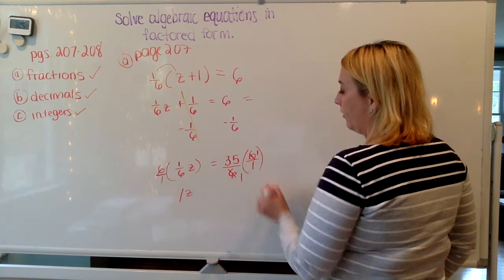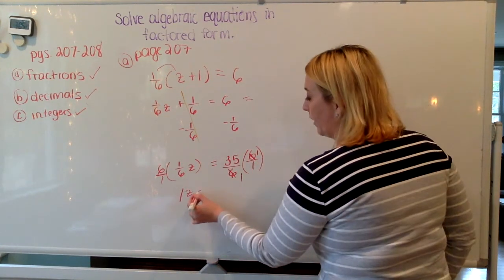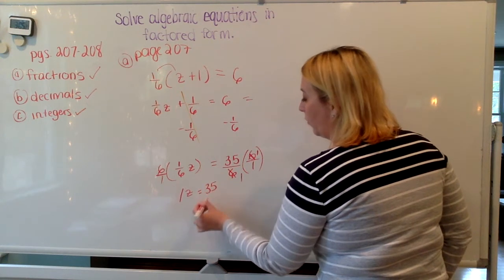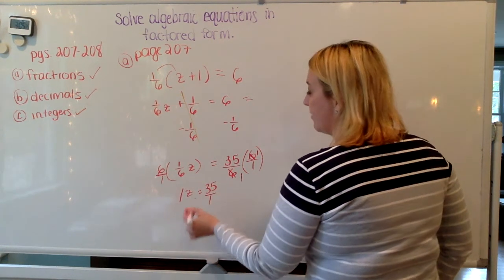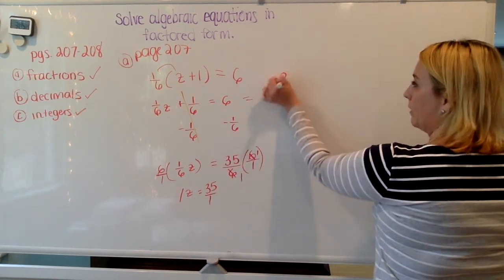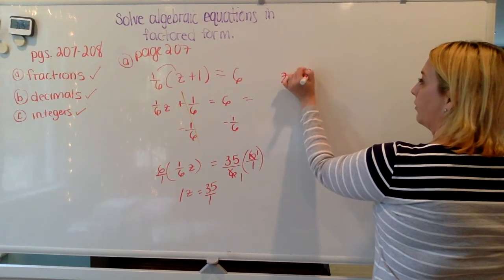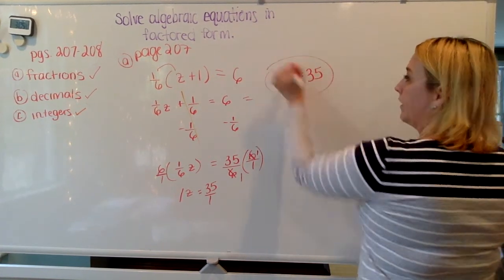35 times 1 is 35. 1 times 1 is 1. So our correct answer ends up being z is equal to 35.